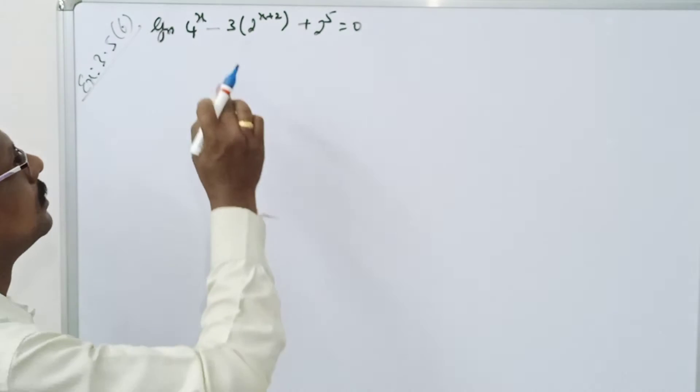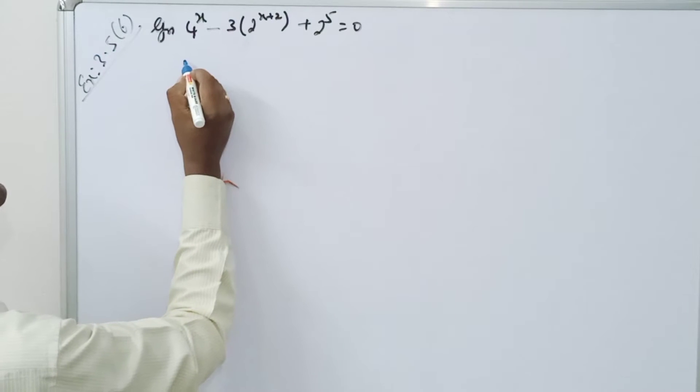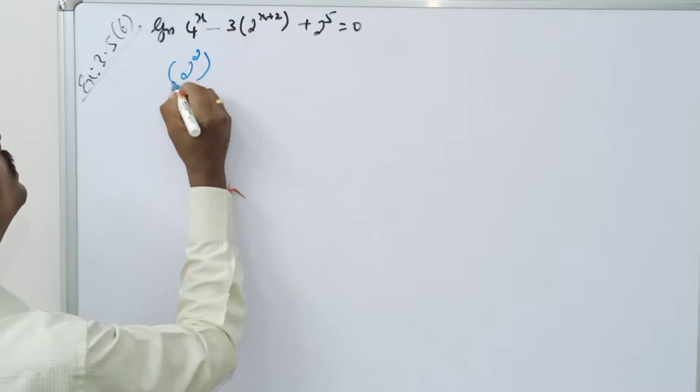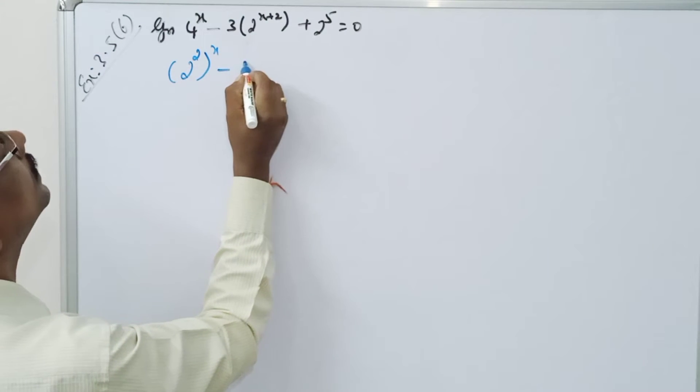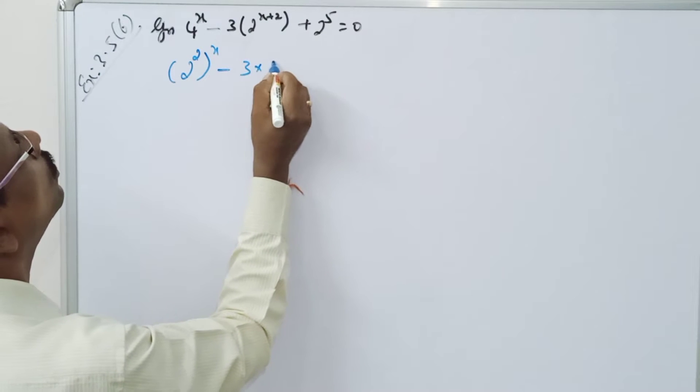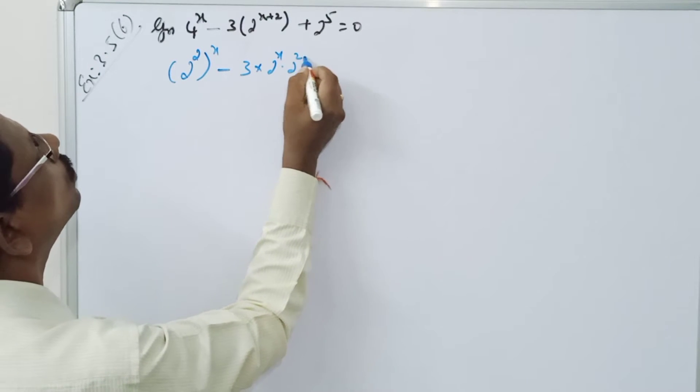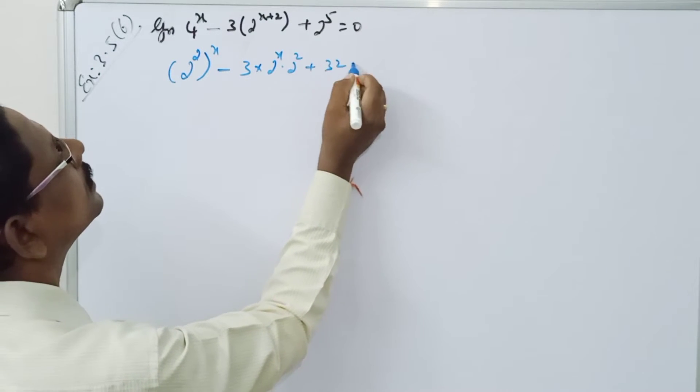Welcome to Mercury Mass. Solve the situation: 2 squared to the power x minus 3 times 2 to the power x times 2 squared plus 32